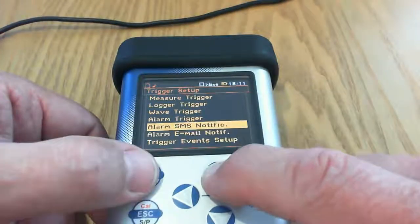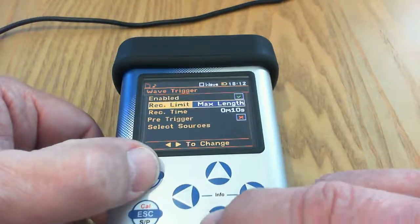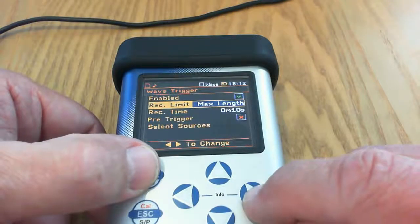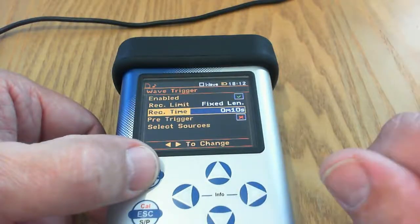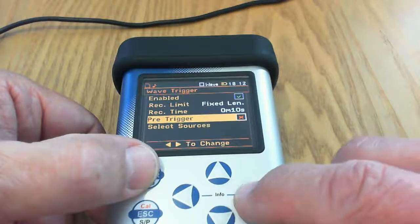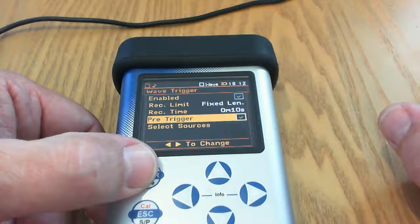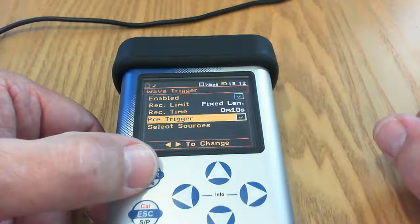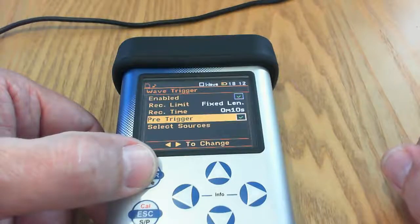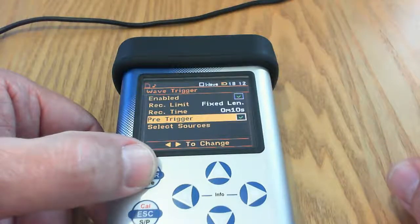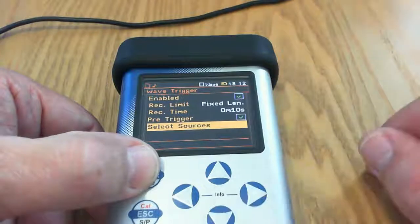Now we can go to the wave trigger and here we can enable it. We can define how long we want to record for, but normally you just take a snapshot just to see what's happening. Let's change that to a fixed length. Here for example we've got ten seconds. We can have a pre-trigger. In other words it will record a little bit of audio before the trigger point. Now the length of this will depend upon the sample rate you've chosen. With the 958A it'll be one second at 48 kHz, two seconds at 24 kHz, and four seconds at 12 kHz.